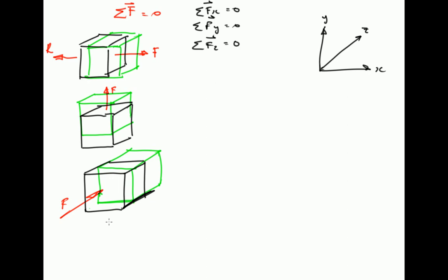So those are the three vector force summations for this body to remain in static equilibrium. For that to not move either in the z direction, the y direction, or in the x direction, these forces and these reactions must all balance out such that the sum of all the forces in the x, y, and z direction is equal to zero.